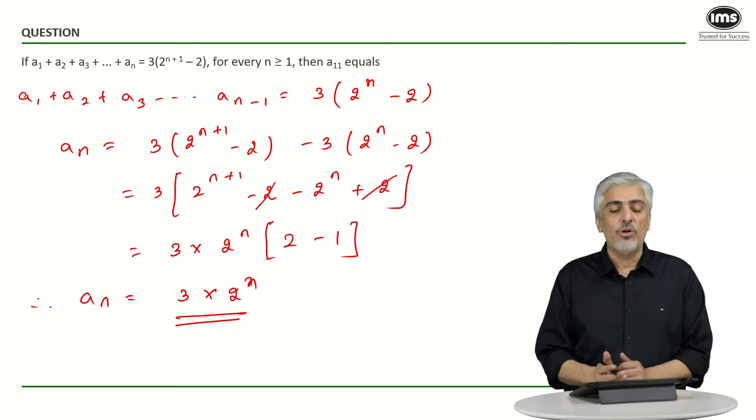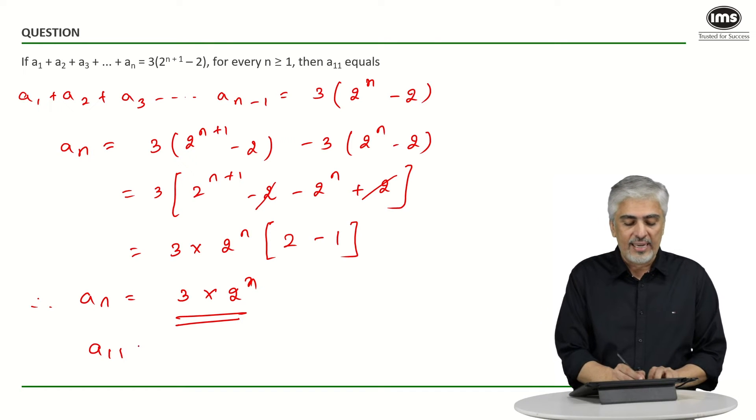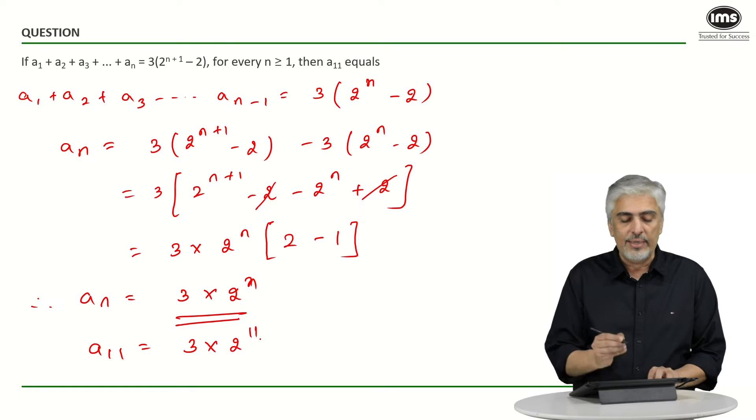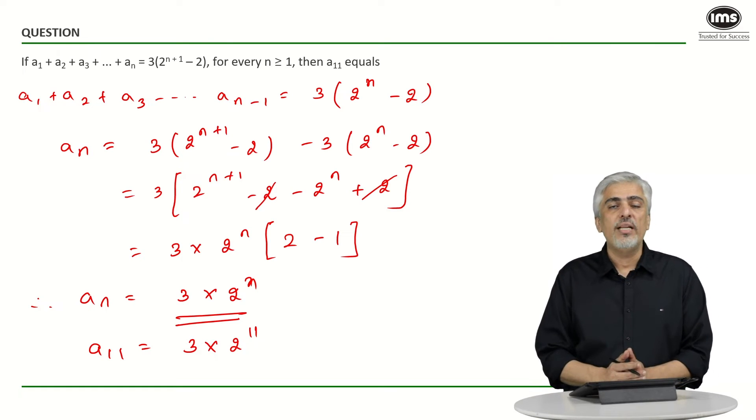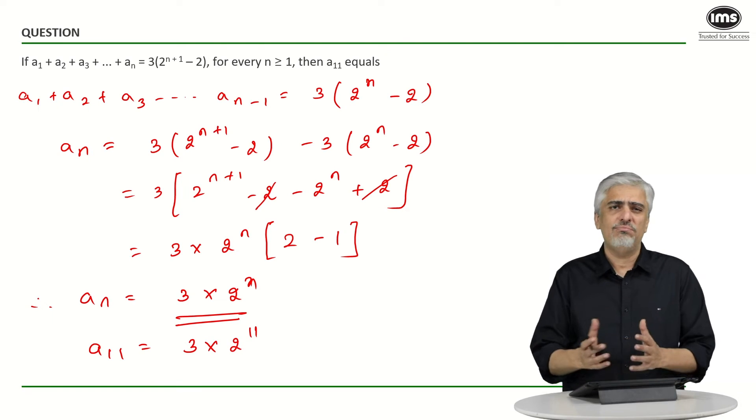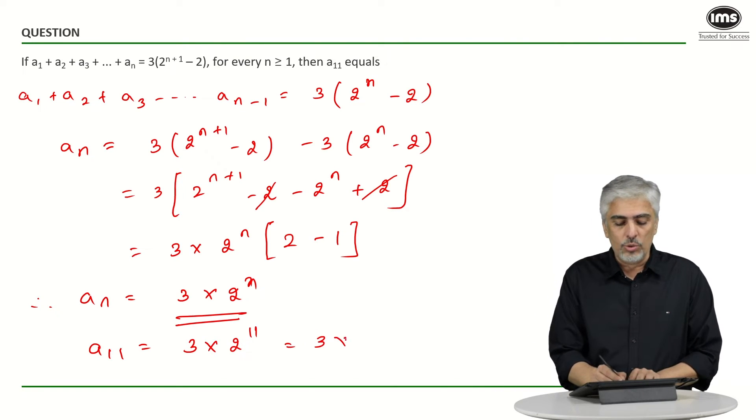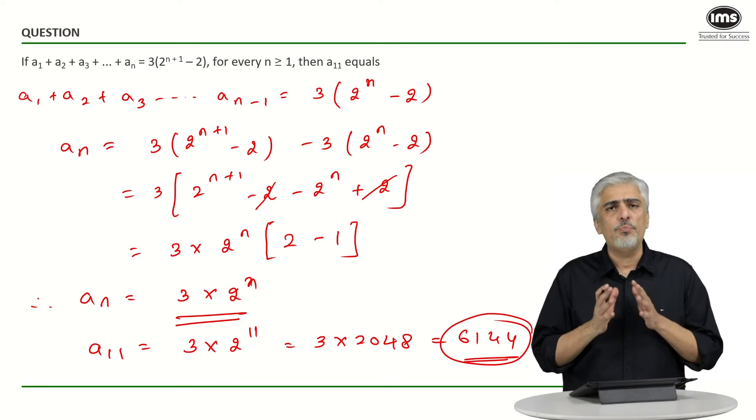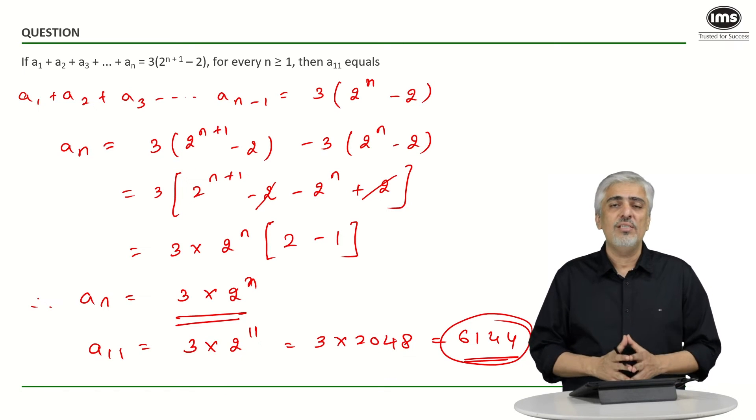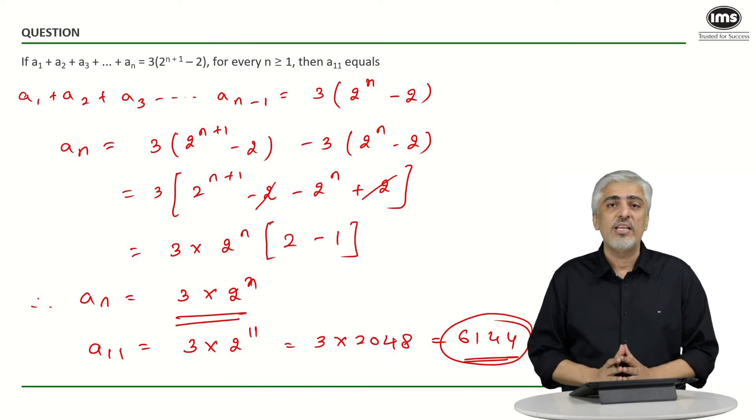3 into 2 raise to n. We got aₙ as, we want to find a₁₁. So what will be a₁₁? 3 into 2 raise to 11. 3 into 2 raise to 11. 2 raise to 11 should be, you should know that value orally 2048. So 3 into 2048 comes to 6144. Very, very proper mathematical way to do the question.